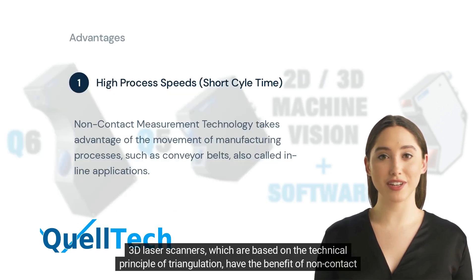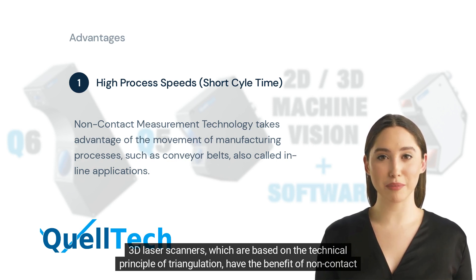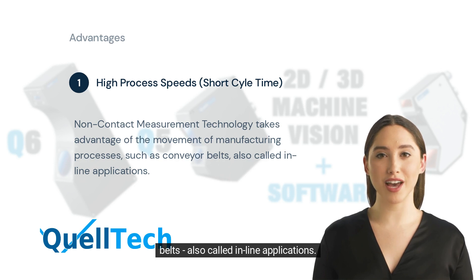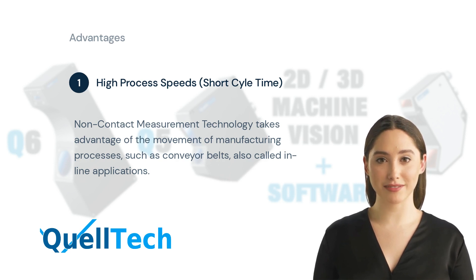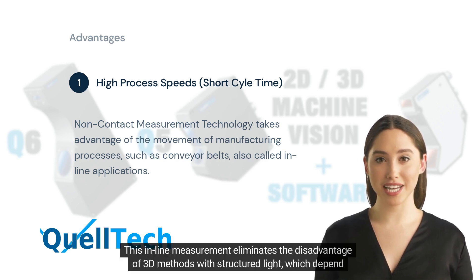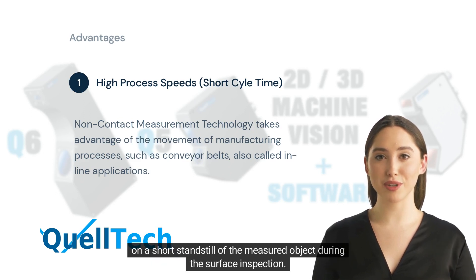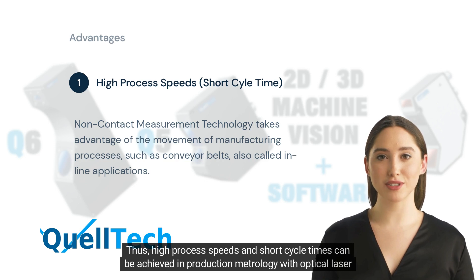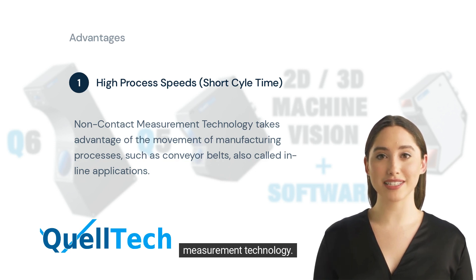3D laser scanners, which are based on the technical principle of triangulation, have the benefit of non-contact measurement technology that can take advantage of the movement of manufacturing processes, such as conveyor belts, also called in-line applications. This in-line measurement eliminates the disadvantage of 3D methods with structured light, which depend on a short standstill of the measured object during the surface inspection. Thus, high process speeds and short cycle times can be achieved in production metrology with optical laser measurement technology.